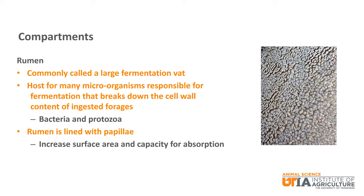The first compartment is probably the most popular compartment — the rumen. It is commonly referred to as a large fermentation vat. It serves as the host for microorganisms, primarily bacteria and protozoa, which are responsible for the fermentation that breaks down cell wall content of ingested forages. The rumen wall is lined with papilla, which serve to increase the surface area of the tissue and allow for increased capacity for nutrient absorption.